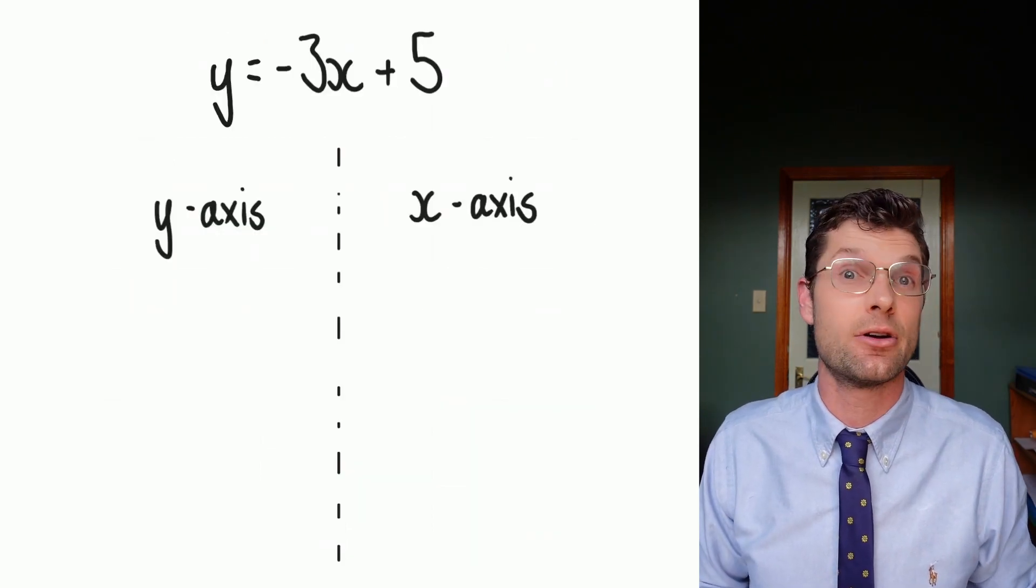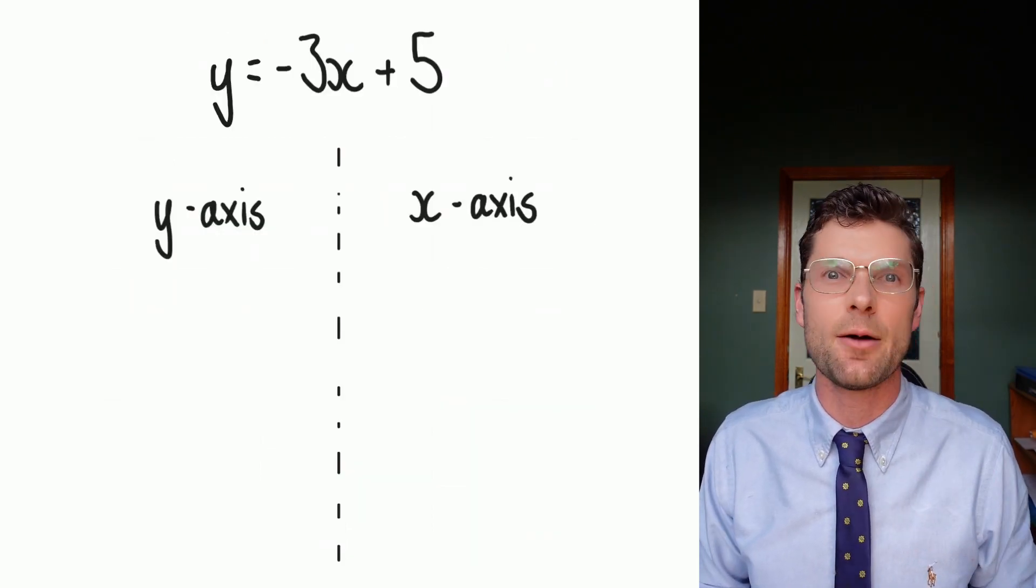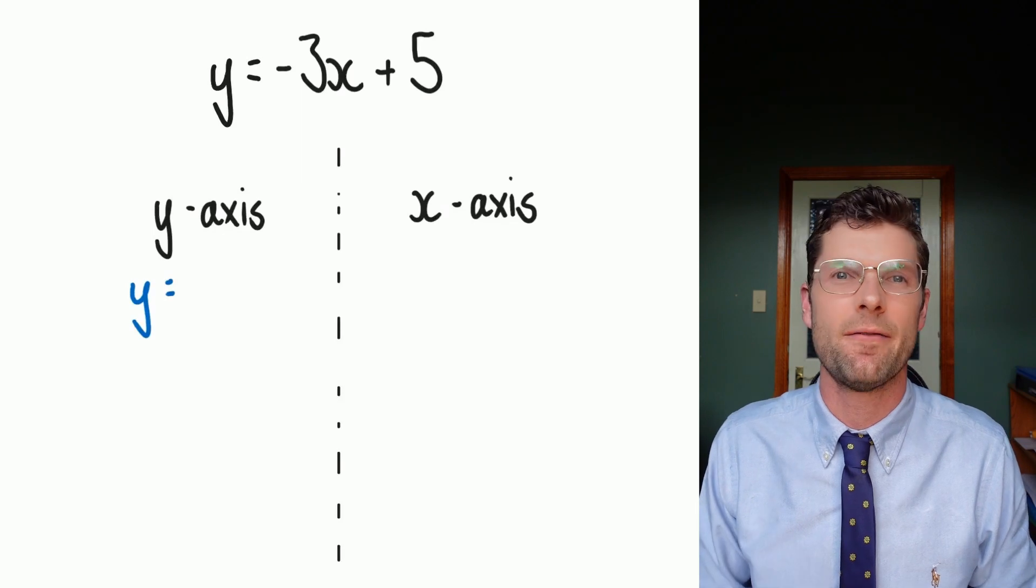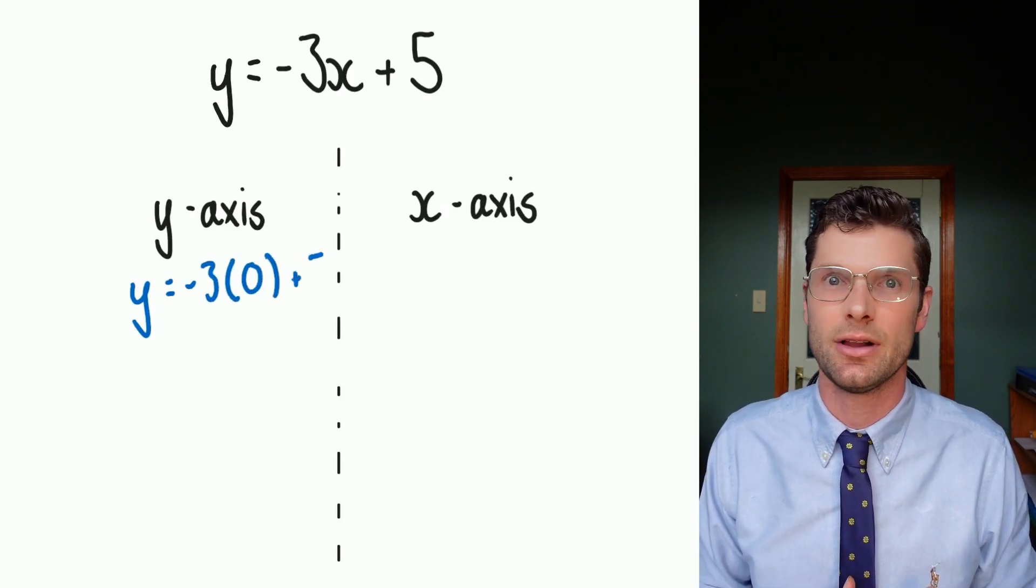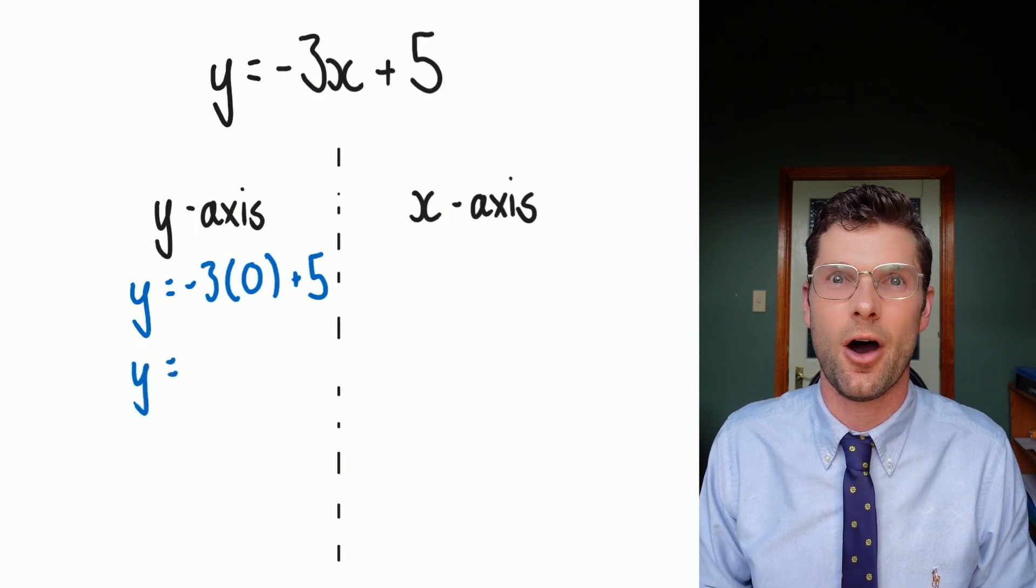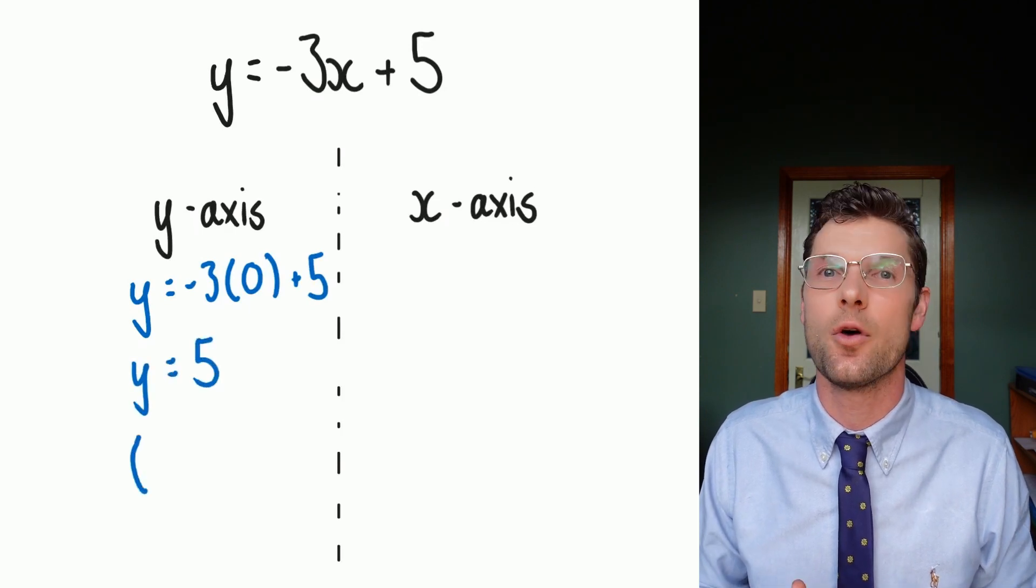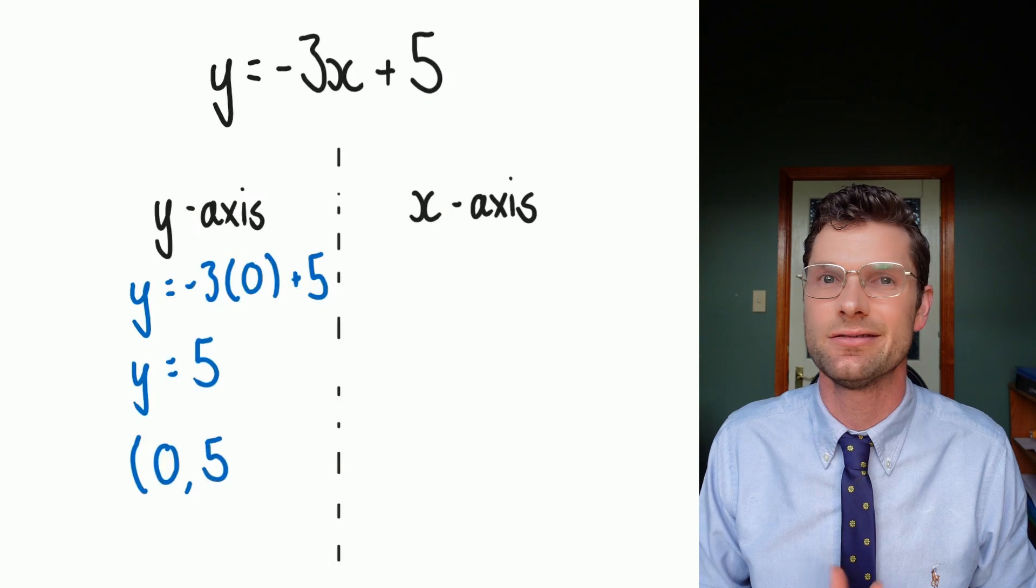Just another example here, we've got y is equal to negative 3x plus 5. Again, we're going to sub zero into both sides, but I'm going to find the y-axis first. So I've got y is equal to negative 3 times 0, plus 5, y is equal to 5. So that means my coordinate of the y-intercept is 0 comma 5, done.